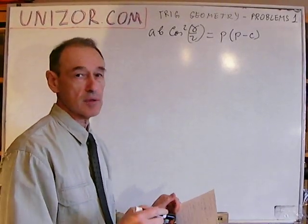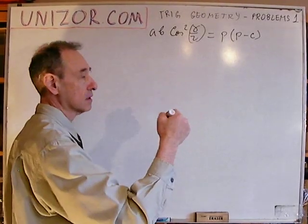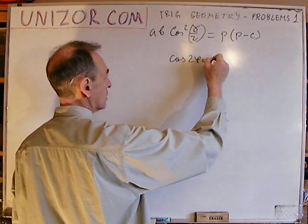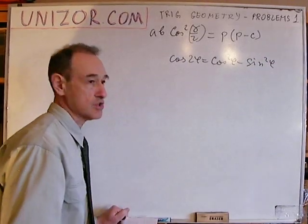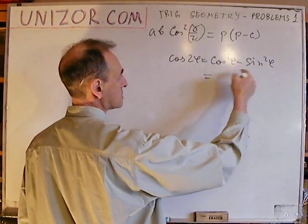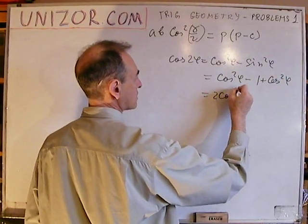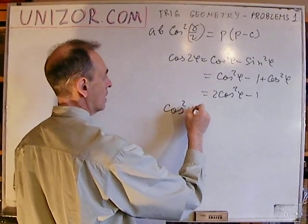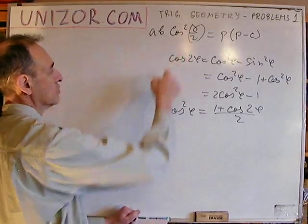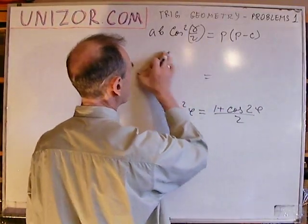I'll do exactly the same in the beginning. I don't like cosine squared of gamma over two; I'd like to convert it to the first power of something. How? Remember, cosine of 2φ equals cosine squared φ minus sine squared φ. Expressing sine squared as 1 minus cosine squared gives 2·cosine squared φ minus 1, from which cosine squared φ = (1 + cosine 2φ)/2. I'm going to use this formula. Phi is gamma over two, so 2φ is gamma.